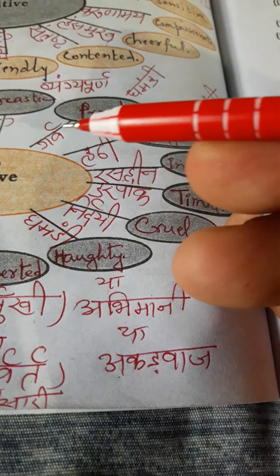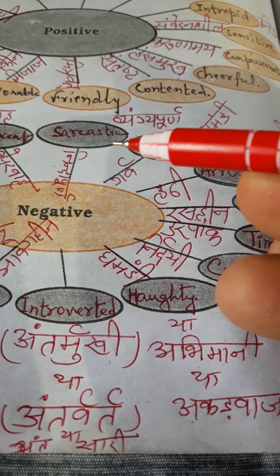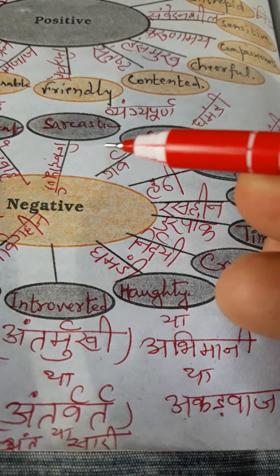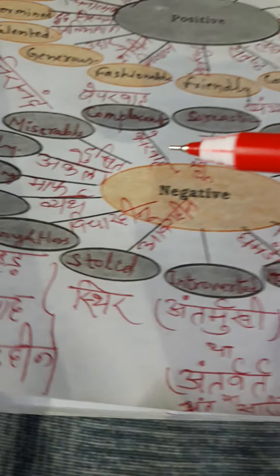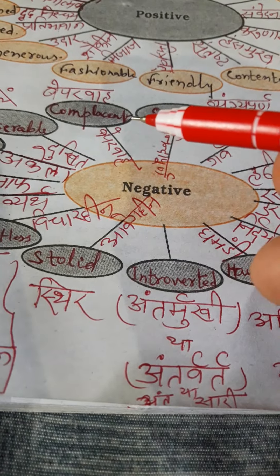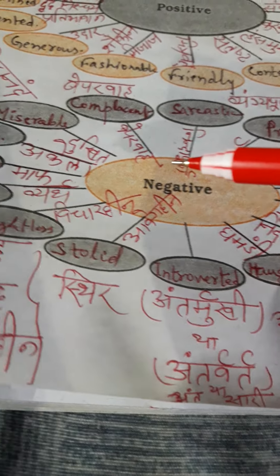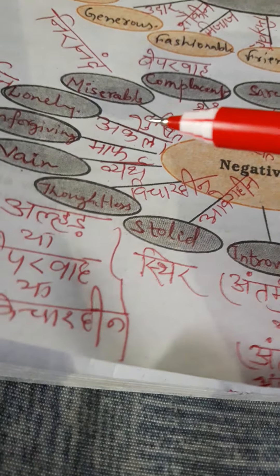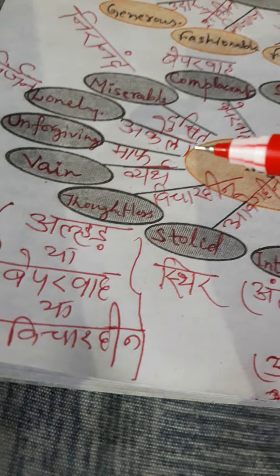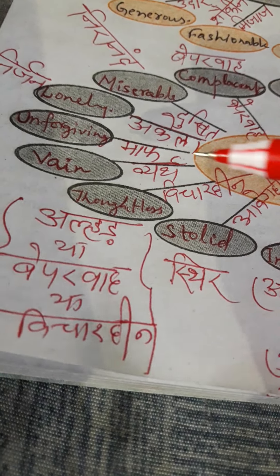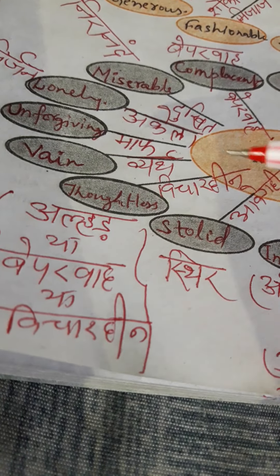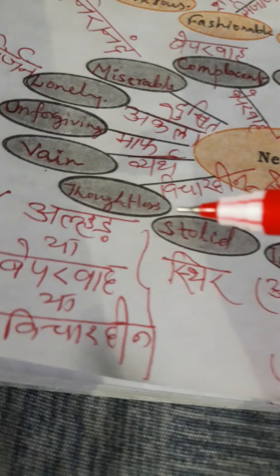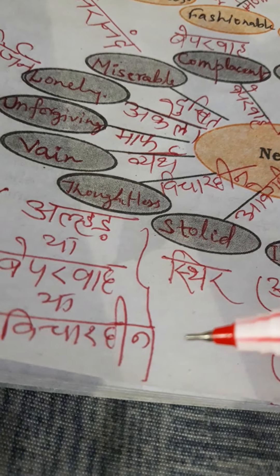Timid means 'darpok', insipid means 'rashin', arrogant means 'hathi', proud means 'garvi', sarcastic means 'vyangapurn' or 'nindapurn', complacent means 'beprabah', miserable means 'dukhit', lonely means 'akela', unforgiving means 'maaf na karne wala', vain means 'vyarth', thoughtless means 'vicharheen' or 'alhar' or 'beprabah'.